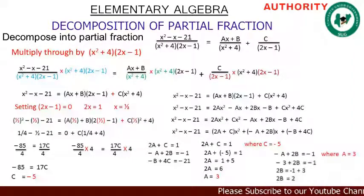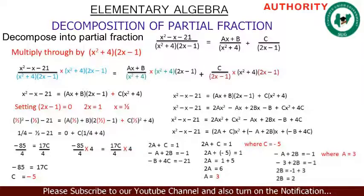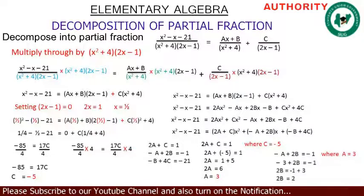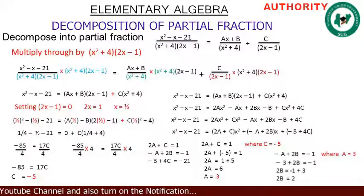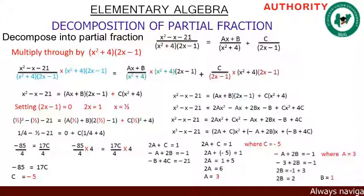Now using the second equation, minus a plus 2b equals minus 1, and substituting a equals 3: minus 3 plus 2b equals minus 1. Taking minus 3 to the other side: 2b equals minus 1 plus 3 equals 2. Dividing both sides by 2 gives b equals 1. You can also use the third equation to verify b.